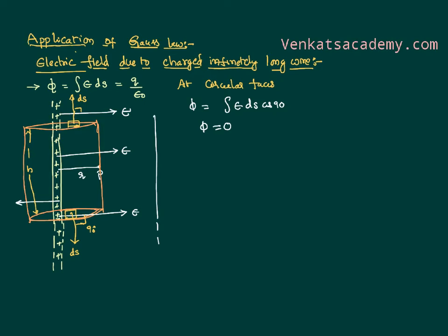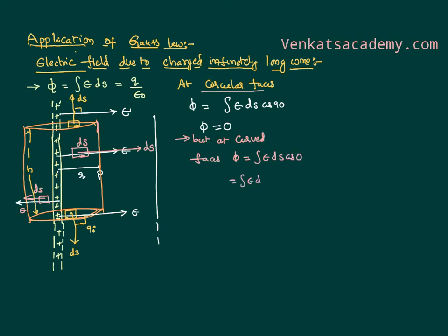Now let us consider the curved face of the cylinder. On the curved surface, the surface area vector is radially outward, and the electric field is also radially outward. So both E and dS point in the same direction. Even considering a small surface area element anywhere on the curved surface, that is also radially outward and the electric field is also radially outward. So at the curved faces, the flux equals the line integral of E·dS·cos 0°, which is simply E·dS — not zero. Now we can apply the Gauss law.